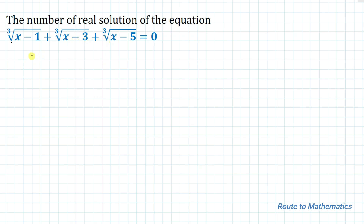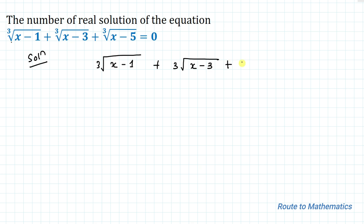So, without any delay, let's start solving. Our equation is cube root of (x minus 1) plus cube root of (x minus 3) plus cube root of (x minus 5) equals to 0.